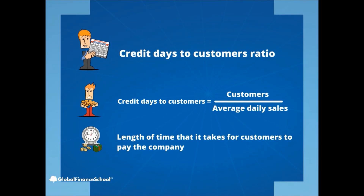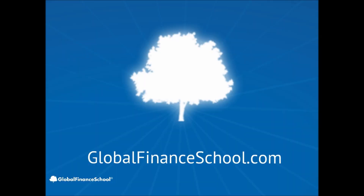Another interesting combined ratio is the credit days to customers ratio. Credit days to customers equals customers divided by average daily sales. This ratio is designed to calculate the length of time that it takes for customers to pay the company.